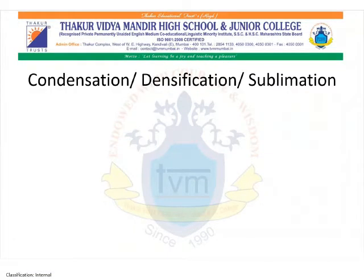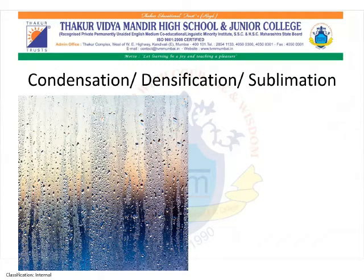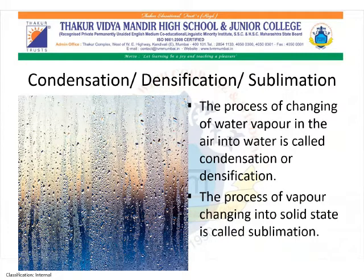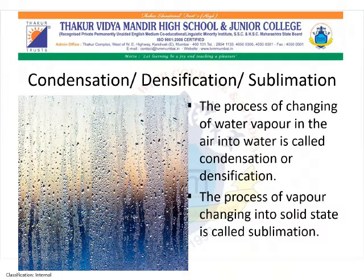In the previous slide, we have seen how condensation takes place on the glass surface. The droplets form on the outer surface of the glass, and we can see the same in this figure. Condensation is the process of changing water vapor in the air into liquid water, also known as densification. In other words, the water in the air exists as a gas known as water vapor.